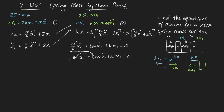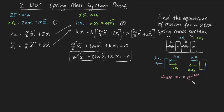We know how to solve an equation like this — we guess x1 in the form e^(jωt). To plug this into the equation, we need x1 double dot and x1 quadruple dot. Differentiating twice gives x1 double dot equals minus ω² e^(jωt), and x1 quadruple dot equals ω⁴ e^(jωt).